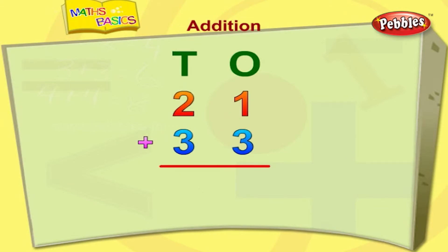I will find the answer for this. We shall add the ones digits first. 1 plus 3 is equal to 4. Now, add the tens column. 2 plus 3 is equal to 5. 21 plus 33 is equal to 54.